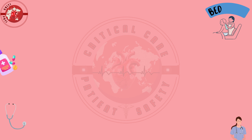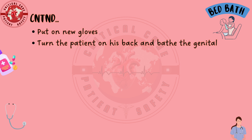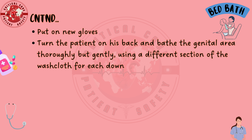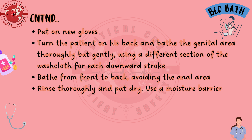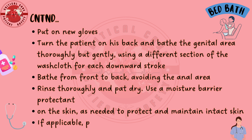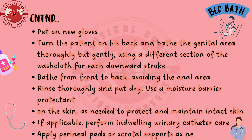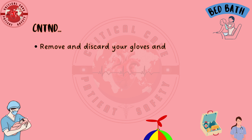Put on new gloves. Turn the patient on his back and bathe the genital area thoroughly but gently, using a different section of the washcloth for each downward stroke. Bathe from front to back, avoiding the anal area. Rinse thoroughly and pat dry. Use a moisture barrier protectant on the skin as needed to protect and maintain intact skin. If applicable, perform indwelling urinary catheter care. Apply perineal pads or scrotal supports as needed. Remove and discard your gloves and perform hand hygiene.